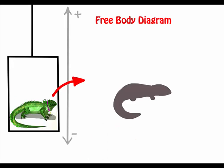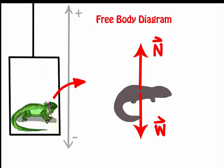Let's draw a free body diagram and look at the forces on the iguana. There are just two vertical forces: the normal force exerted by the floor on that iguana, and the iguana's own weight, which is the force of gravity exerted on the iguana.